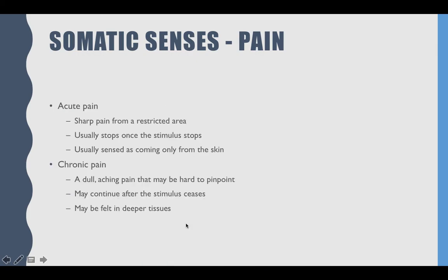There are two types of pain: acute pain versus chronic pain. Acute pain is very short — like a paper cut. Chronic pain lasts over a very long period of time, is hard to pinpoint, you don't exactly know where it's coming from, and it's most likely from a long-term disease.